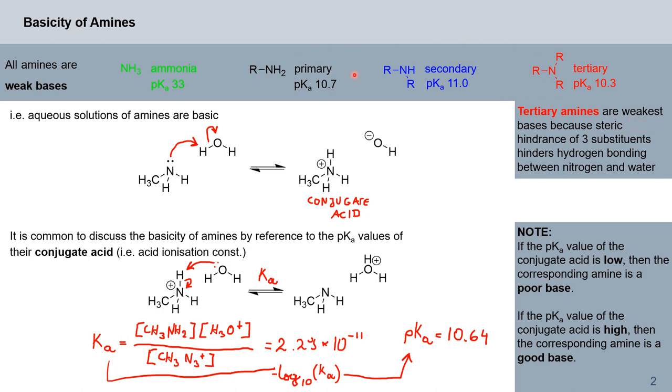Tertiary amines are, in fact, the weakest bases of these three because you have three sterically demanding substituents that hinder hydrogen bonding between this nitrogen lone pair and water.